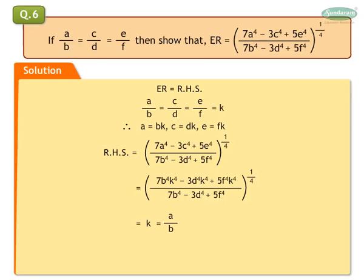And students, K is equal to A upon B. Therefore, our left hand side is equal to right hand side. Hence, proved.